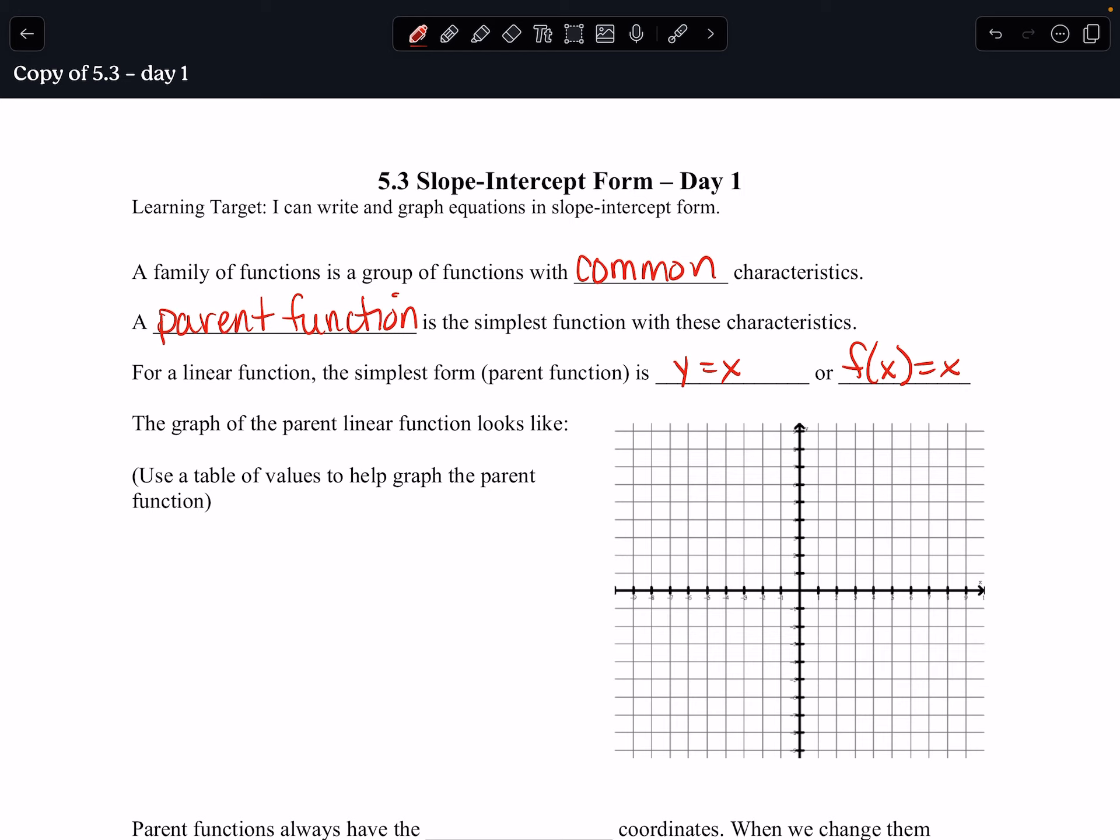So a graph of a parent linear function, y equals x, is when you have a table that looks like this. Negative 2, y equals negative 2, negative 1, y equals negative 1, 0, y equals 0. So as you can tell, when you have these parent functions, the x and the y are the same. So when x is 2, y is 2.